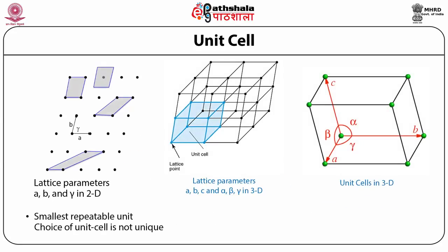Unit cell. As you all know, two non-collinear translations define a plane lattice and three non-coplanar translations define a space lattice. The question arises: which pair of translations does one choose to describe it? In fact, there is an infinity of choices for each translation because a line joining any two lattice points is a translation of the lattice. A figure on the extreme left hand side shows a plane lattice and some of the choices that can be made.